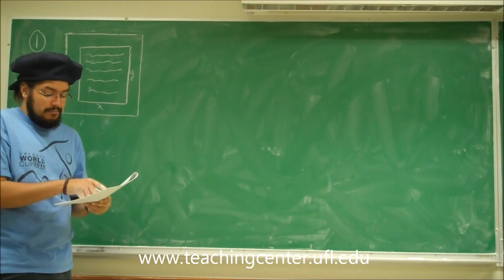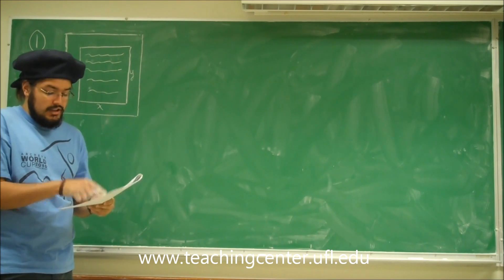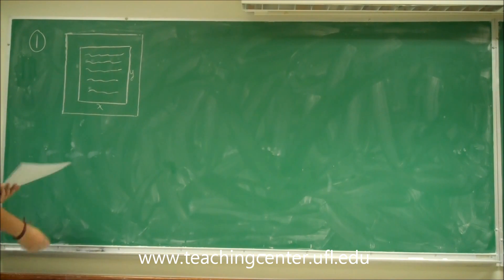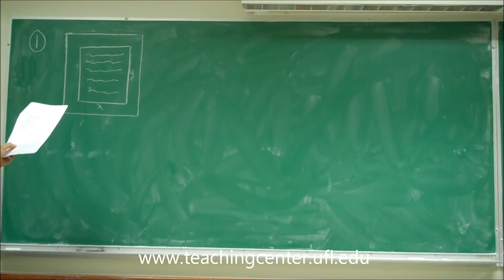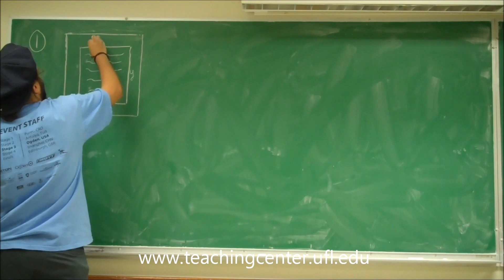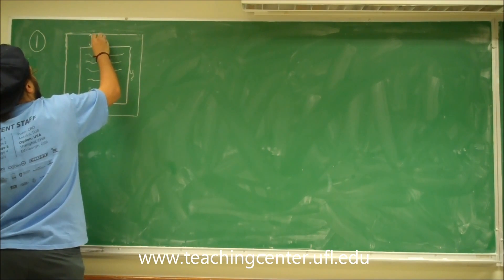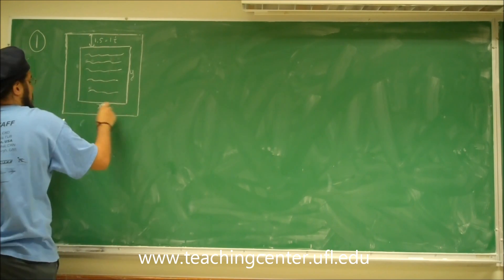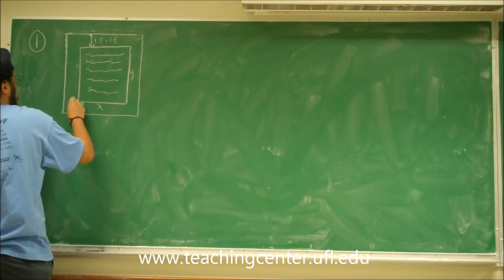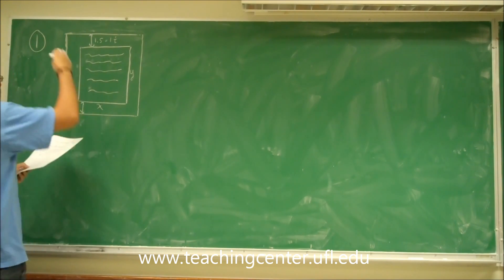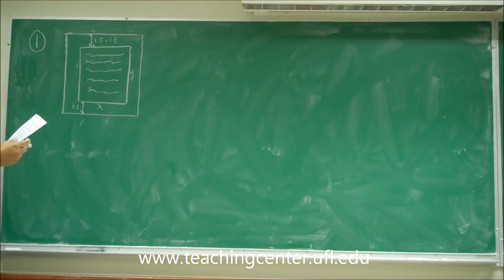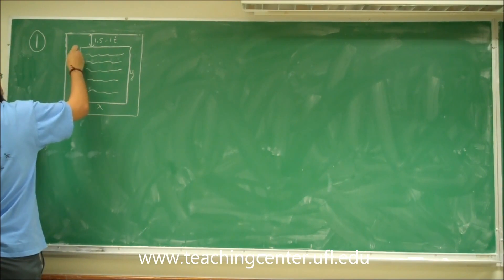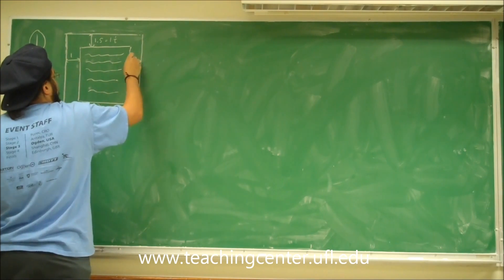Let x and y be the width and height of the print area as shown — x and y. The margin at the top is 1.5, and the same at the bottom, so top and bottom are 1.5. The margins on the left and the right are to be one inch, so this is 1 and that is 1.